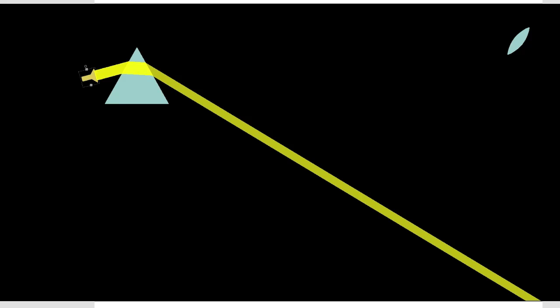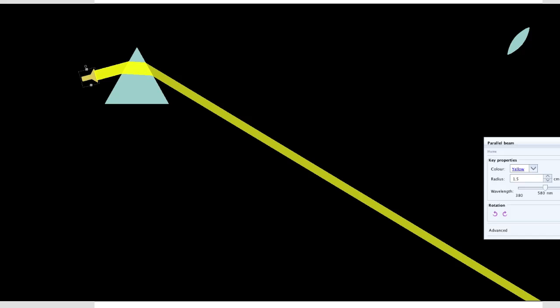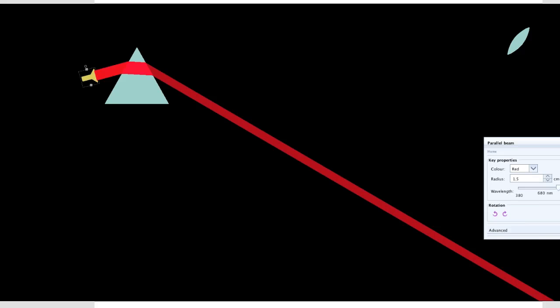Well it does bend but I don't see any colors. Hmm. What if we try a different color? Let's try red. Well the beam changed direction a bit but it's still only just bending. I still don't see any colors.